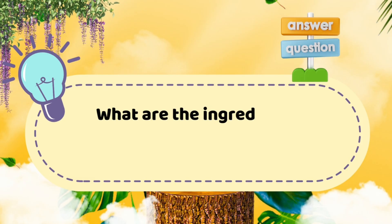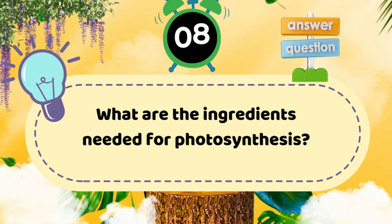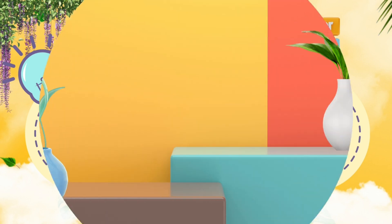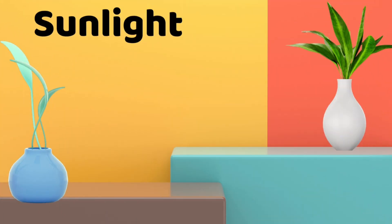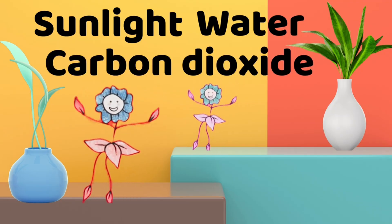Question two: What are the ingredients needed for photosynthesis? Answer: sunlight, water and carbon dioxide. Well done, you got all the cooking items.